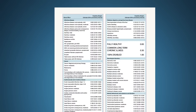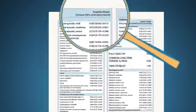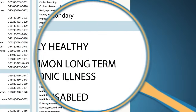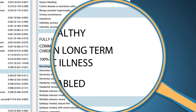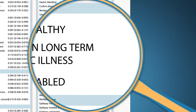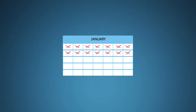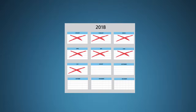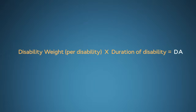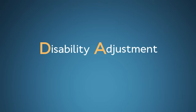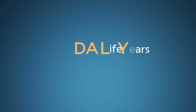Morbidity is a bit more complicated to calculate. First, each illness effect is given a severity rating called a disability weight, ranging from 0, which means fully healthy, to 0.3, which is common for long-term chronic illnesses, to 1, which means 100% disabled. Next, because effects can be short or long-term, duration of the morbidity is factored in. Think of this as the DA in DALY, or disability adjustment due to morbidity. When both mortality and morbidity contributions are added together, you have a full DALY score.